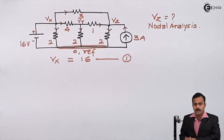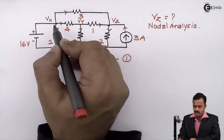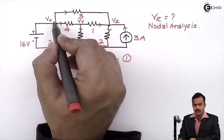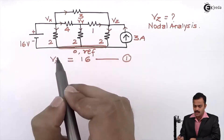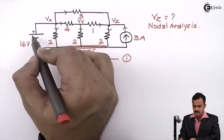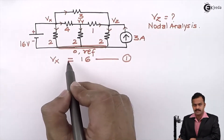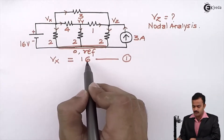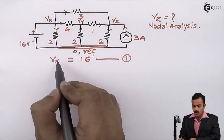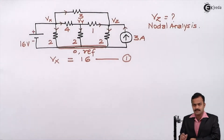We have considered such a type of problem earlier: whenever only a voltage source is present between a node and the reference node, the potential of that node is the same as the voltage source. In this case, Vx equals 16. One more thing we have discussed — do not consider this as a variable, but consider this as an equation.